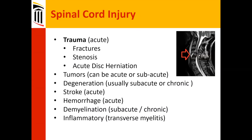Causes of spinal cord injury: trauma and acute injury as shown in the MRI — that's a bad looking picture. Fractures, stenosis, and acute disc herniation all contribute. Tumors can be acute or subacute, natural degeneration can be subacute or chronic, stroke in the spinal cord itself, hemorrhage, and demyelination from various autoimmune disorders, for example inflammatory transverse myelitis. All of these can enter your differential diagnosis depending on what you know about the patient.